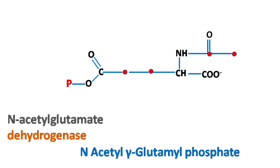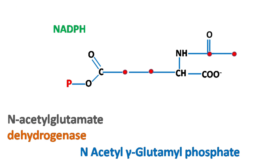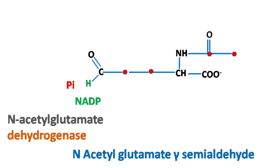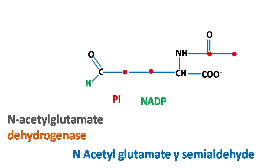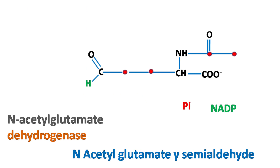N-acetylglutamate dehydrogenase then removes the phosphate with the help of NADPH to form N-acetylglutamate gamma-semialdehyde.